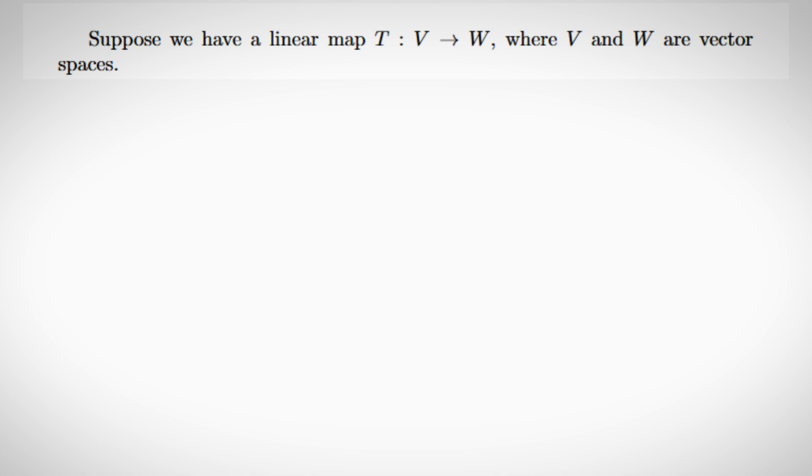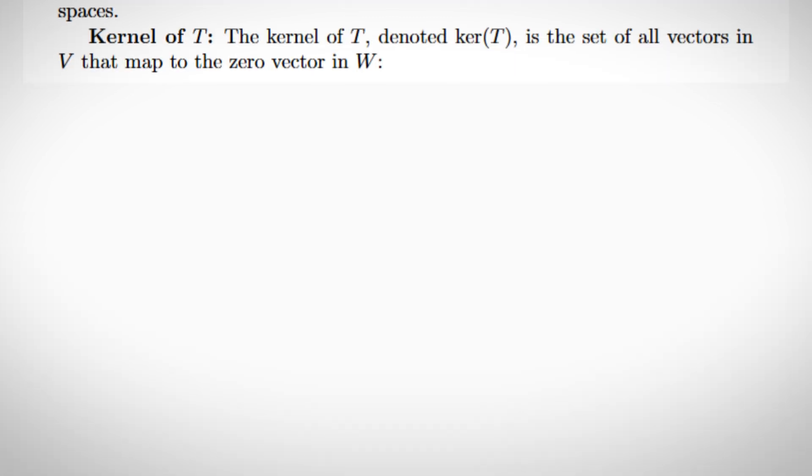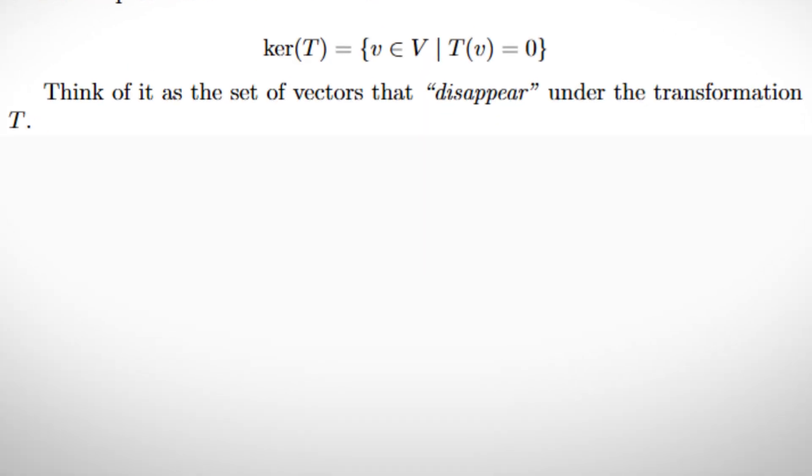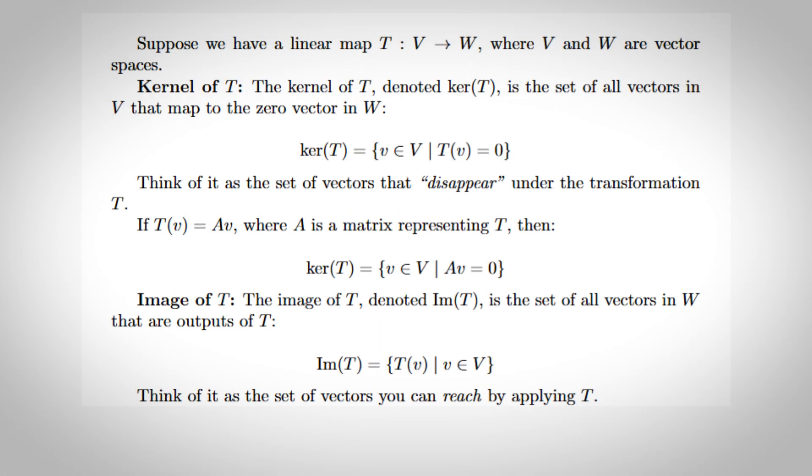Kernel and Image. Suppose we have a linear map or function between vector spaces T, where V and W are vector spaces. The kernel of T is the set of all vectors in V that map to the zero vector in W. Think of it as the vectors that disappear under T. In terms of matrices, if T(v) equals Av, then the kernel of T is all v such that Av equals zero. The image of T is the set of all vectors in W that are outputs of T. Think of it as the vectors that you can reach by applying T. In matrix terms, the image of T is the column space of A.